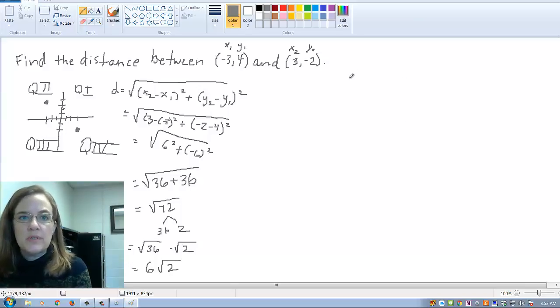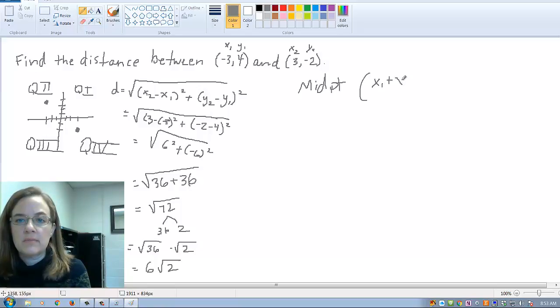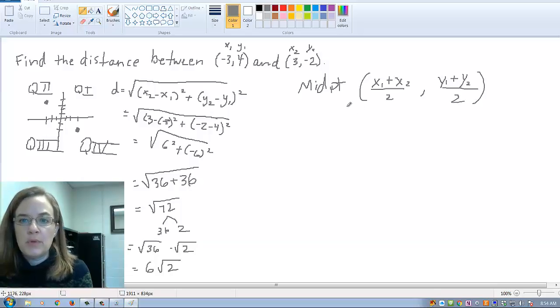The last thing we're going to do on this video is to find the midpoint. The midpoint is the average of the x's and the y's. So, a completely different formula. You need to have these both memorized. In our case, we've got -3 plus 3 over 2, and 4 plus -2 over 2.